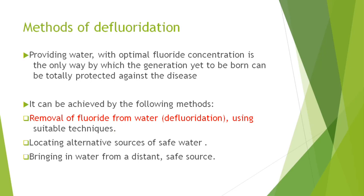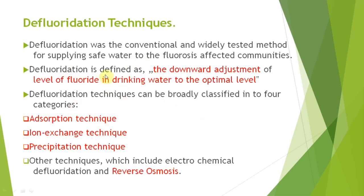By definition, defluoridation is a downward adjustment of the level of fluoride in drinking water to the optimal level. Fluoridation is upward adjustment, whereas defluoridation is downward adjustment to the optimal level of 1 ppm. The common methods are: adsorption technique, ion exchange technique, precipitation technique, and reverse osmosis. Adsorption keeps some material in the water and fluoride gets adsorbed to the surface; ion exchange replaces fluoride ions with cations and anions.